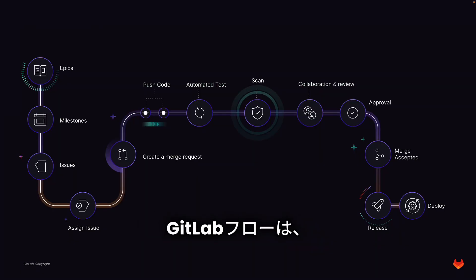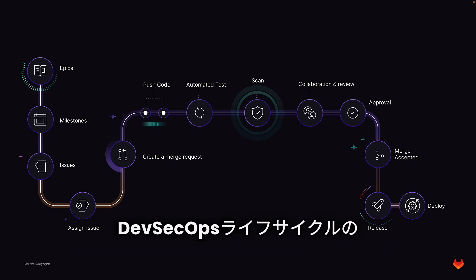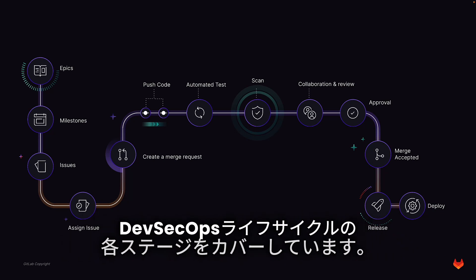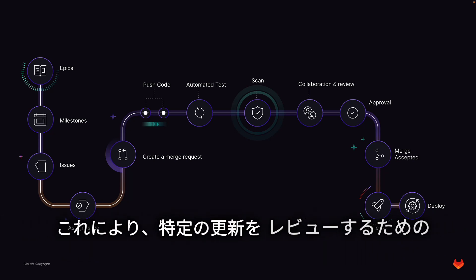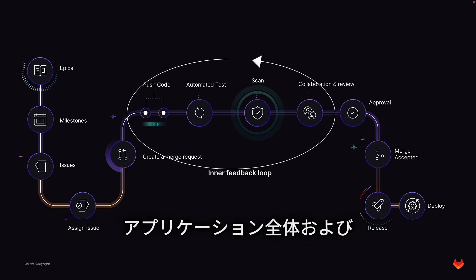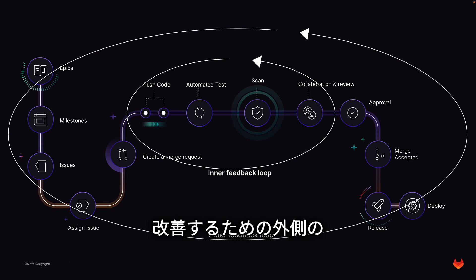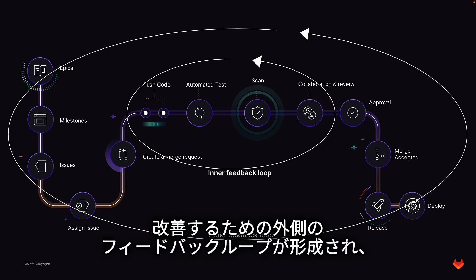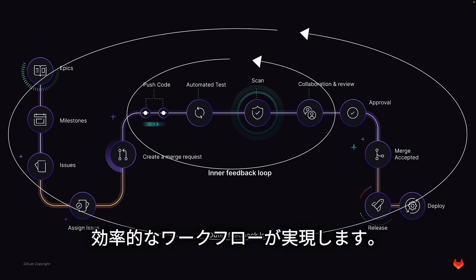Based on best practices and lessons learned, GitLab Flow spans across the stages of the DevSecOps lifecycle, forming an efficient workflow with an inner feedback loop for reviewing specific updates and an outer feedback loop for improving the entire application as well as the development lifecycle process itself.